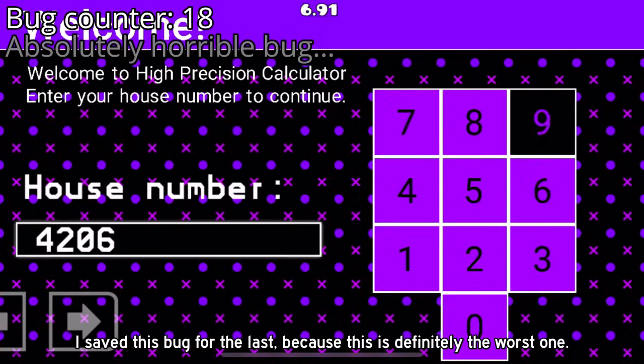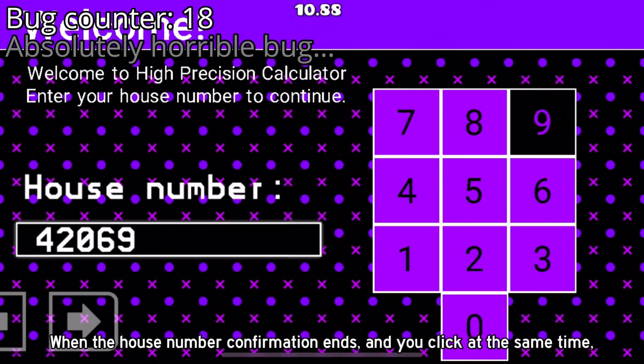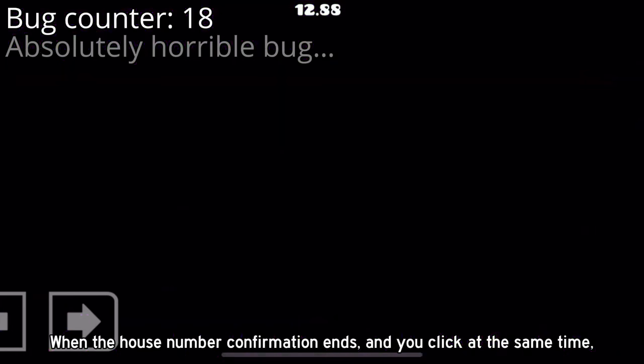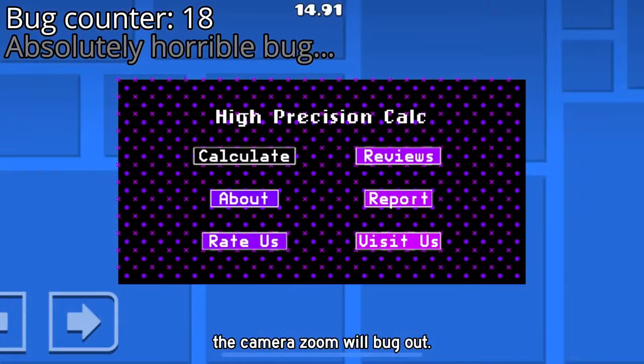I saved this bug for the last, because this is definitely the worst one. When the house number confirmation ends and you click at the same time, the camera zoom will bug out.